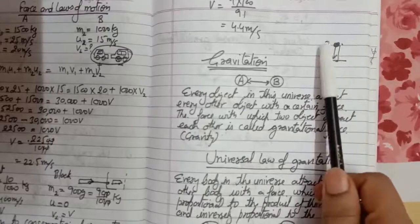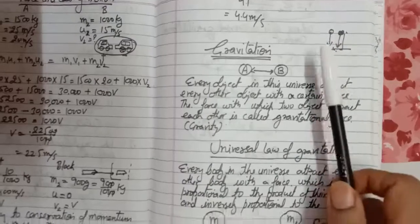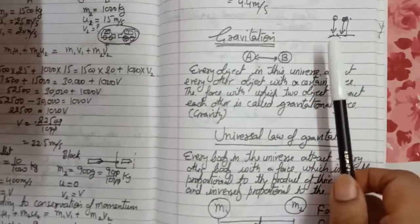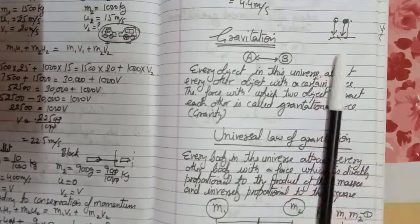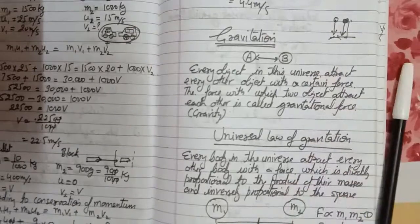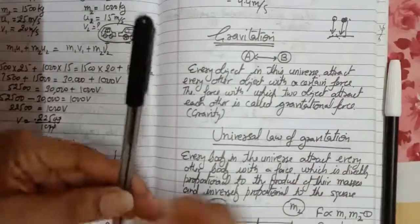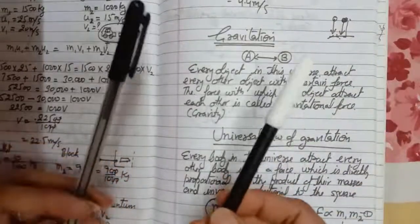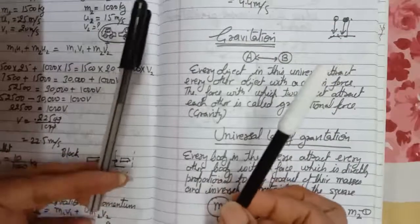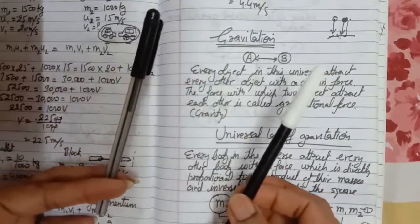Not only the earth and the object have this type of force, but every object in the universe has some attraction force. For example, these two pins — this one and this one — both have some attraction force between them, which is called the gravitational force.